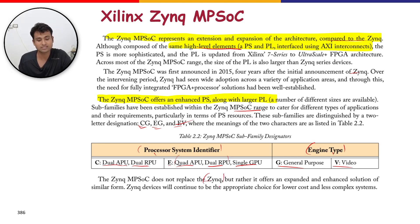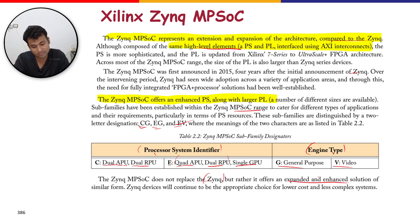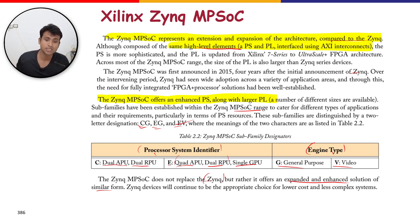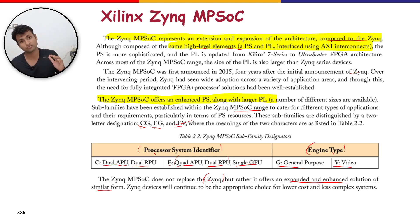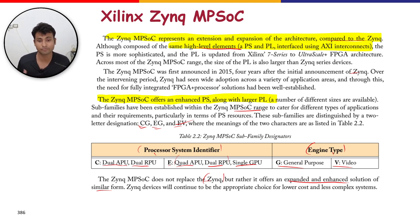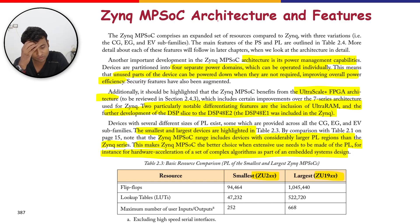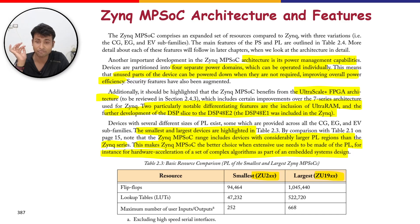Zynq MPSOC does not replace Zynq 7000; if your application is small, Zynq 7000 is sufficient. But for advanced applications — like 360-degree camera systems or drone control requiring higher processing capabilities — Zynq MPSOC is the appropriate choice. Let's look at the MPSOC architecture and features.